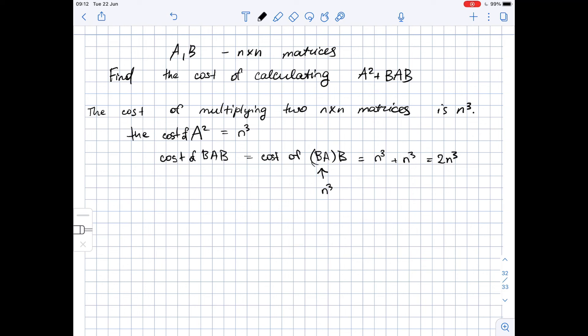That means that the cost of finding A squared plus BAB equals n cubed plus 2 n cubed, which is 3 n cubed.